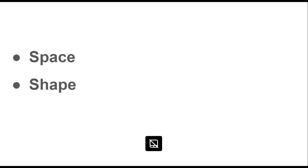For this project, we're going to review the element of space, and we're going to really focus today on the element of shape. Space refers to the distance or area between, around, above, below, or within things. We know it can be 2D or 3D. Last week, we talked about how we can create space by using the size of objects and where they are placed on the paper, using positive and negative space, and overlapping images to create the illusion of space.